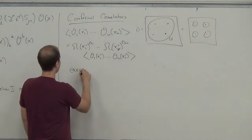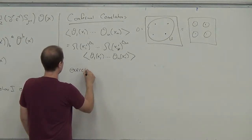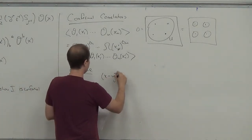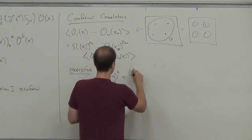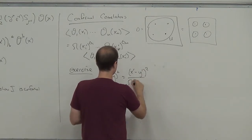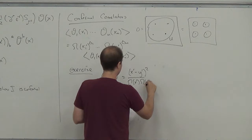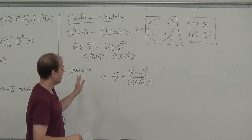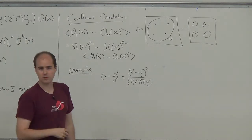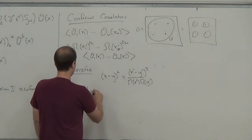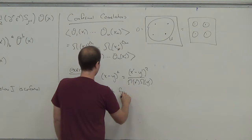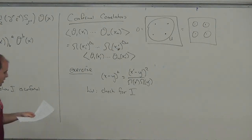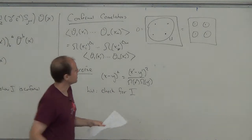To understand the solutions to this conformal Ward identity, a useful exercise is to show that under a conformal transformation, the squared distance between two points transforms in a simple way. This is obvious for translations, rotations, and rescalings, but not so obvious for special conformal transformations. As a hint, it suffices to check for inversions — and you can think about why that is.